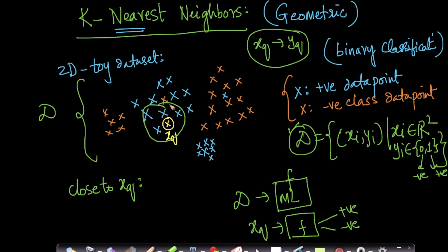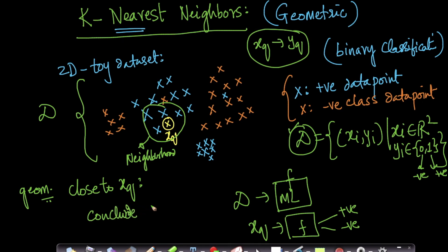Intuitively, that makes a lot of common sense — and that's literally what k-nearest neighbor is all about. Given a query point xq, I want to find its class yq. That's what classification is. One way to do it is: I look at all the points which are geometrically close to xq. Most of the points in its neighborhood are blue, so I decide that xq is also a blue point.